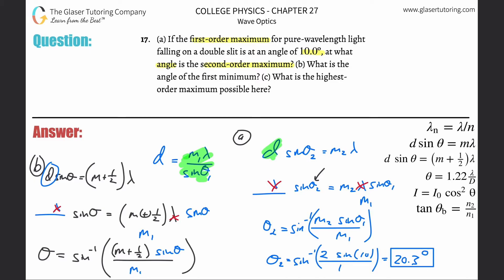For the first minimum, m = 0, so (m + 1/2) = 0.5. The first order max angle θ₁ was 10 degrees, and m₁ = 1. So the calculation becomes: θ_min = arcsin(0.5 × sin10° / 1), which is arcsin(0.5 × sin10°). This gives approximately 4.98 degrees. That's the answer to letter B.